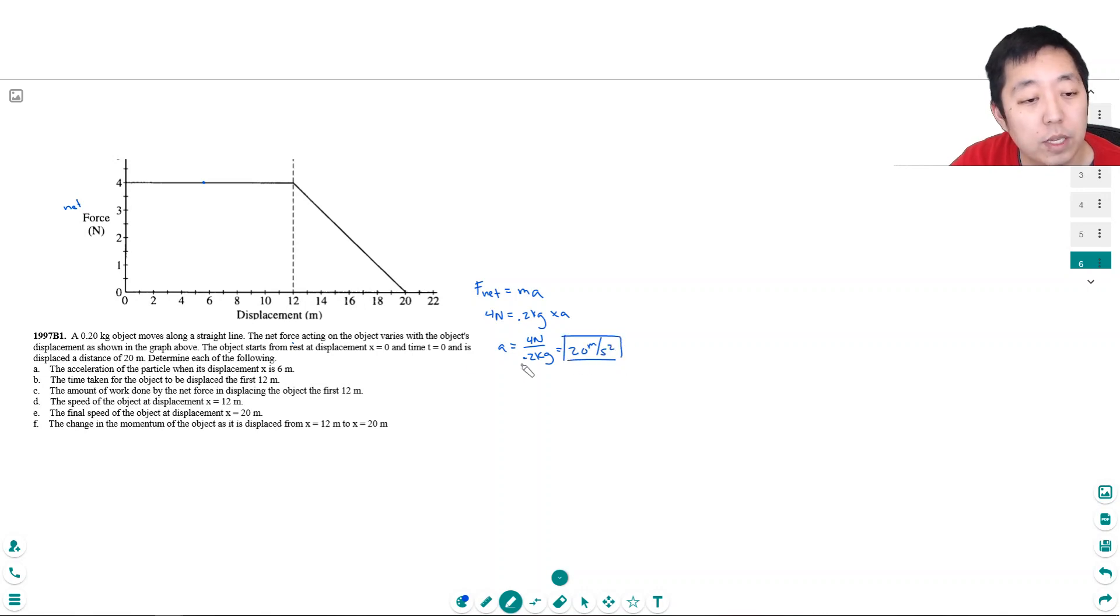Okay, constant acceleration here because it's constant force. Part B: the time taken for the object to be displaced the first 12 meters. So it's under this constant acceleration for 12 meters. If I want to know time, acceleration, and displacement, I'm looking at this kinematic equation: V0t plus one half at squared. This is a good habit—I always write the entire kinematic equation and then start plugging in things. I know I want to go 12 meters, the object starts from rest, one half a is 20 meters per second squared because during this whole 12 meters it's under constant acceleration times t squared.